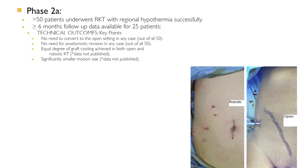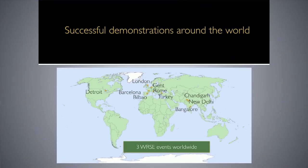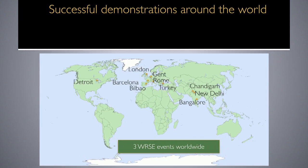By 25 to 30 cases the procedure was stabilized, and all these developments were reported as part of the IDEAL platform. More than 50 patients underwent robotic kidney transplant with regional hypothermia during this phase. Technical outcomes: no conversion to open surgery, no anastomotic revision required, and equal degree of pelvic cooling in all cases. Functional outcomes: no delayed graft function, minimum serum creatinine at discharge was 1.3, at one month 1.1, and at six months 1.1.